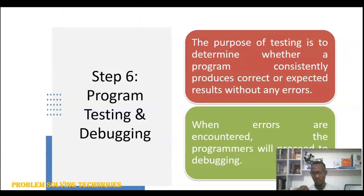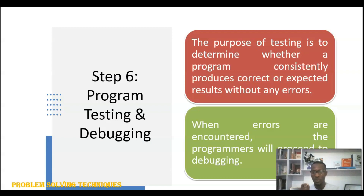When we are cooking, after we are done with our food, it is important for us to test the food to ascertain if the taste or the ingredients are in the right proportion, or if the food met the taste we intended. Likewise, the purpose of testing your program after coding is to determine whether the program consistently produces the correct result without errors. We must test our code to know if it actually met the requirements of the user. This can be done by supplying data into our program and seeing the results produced.